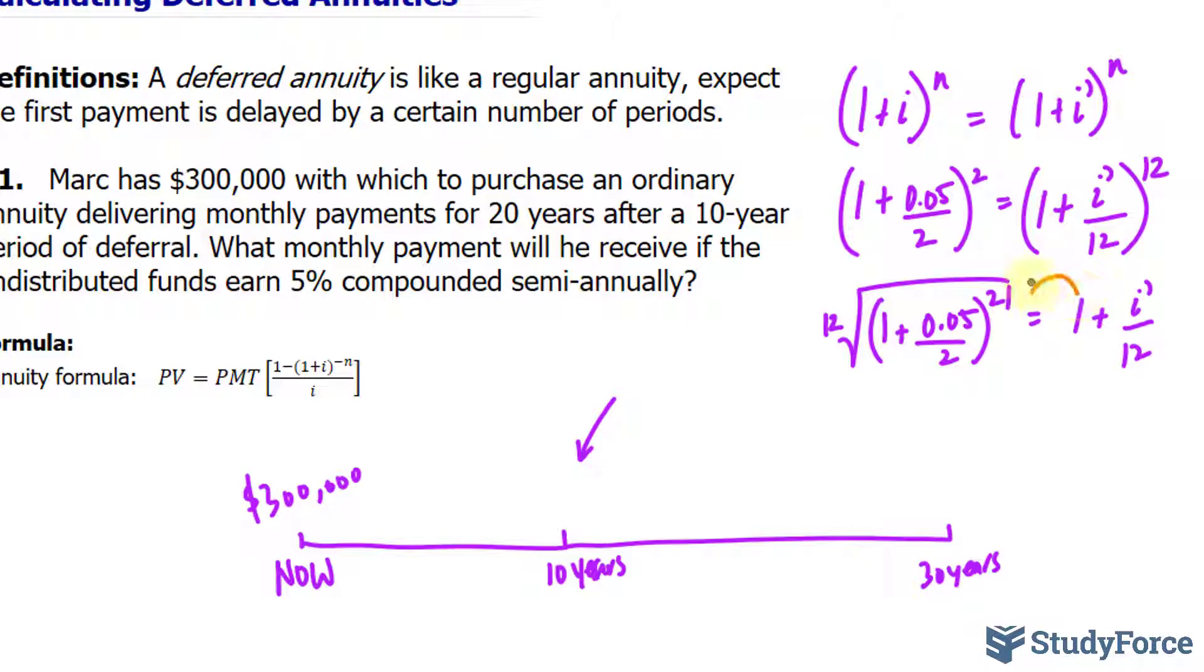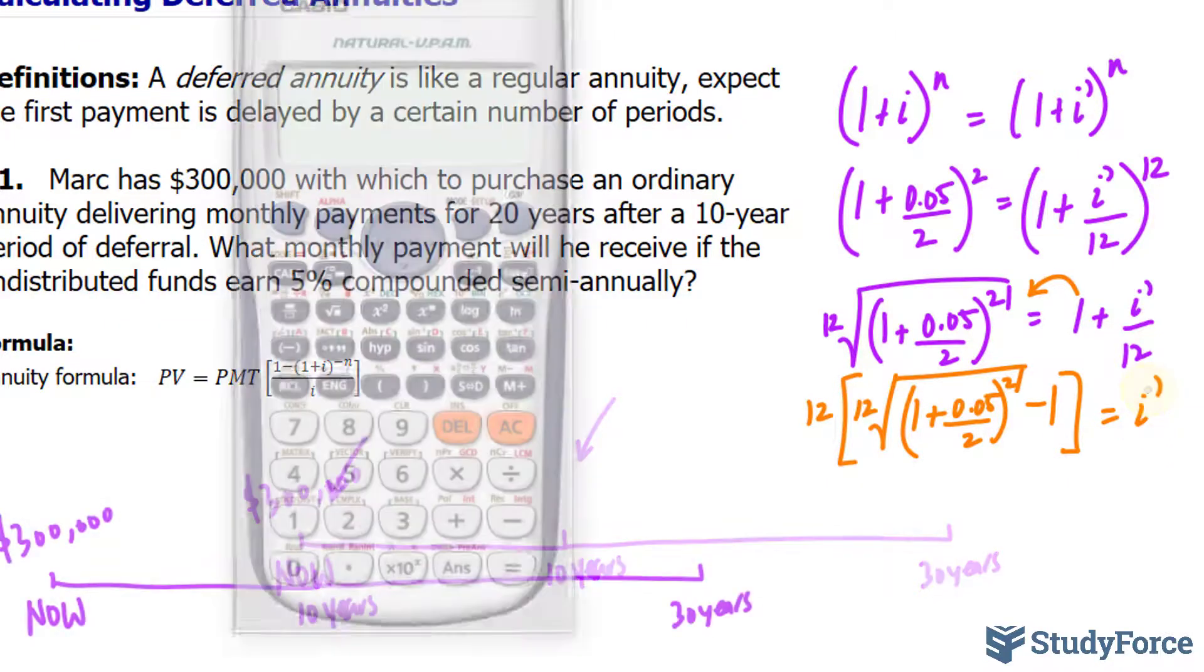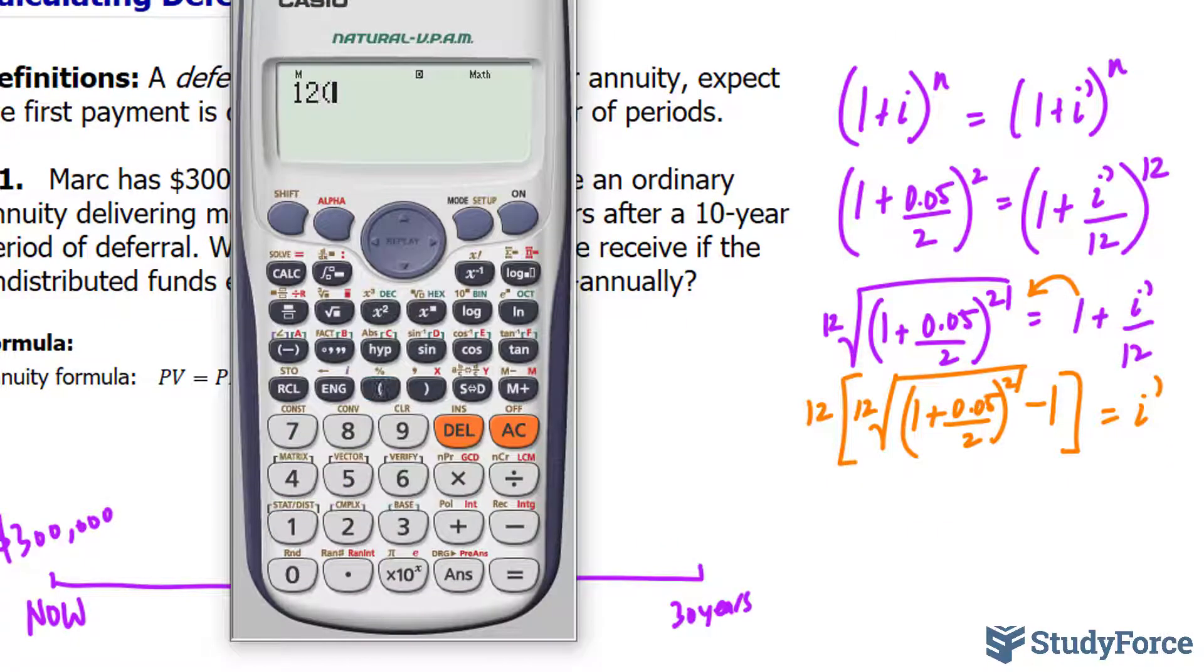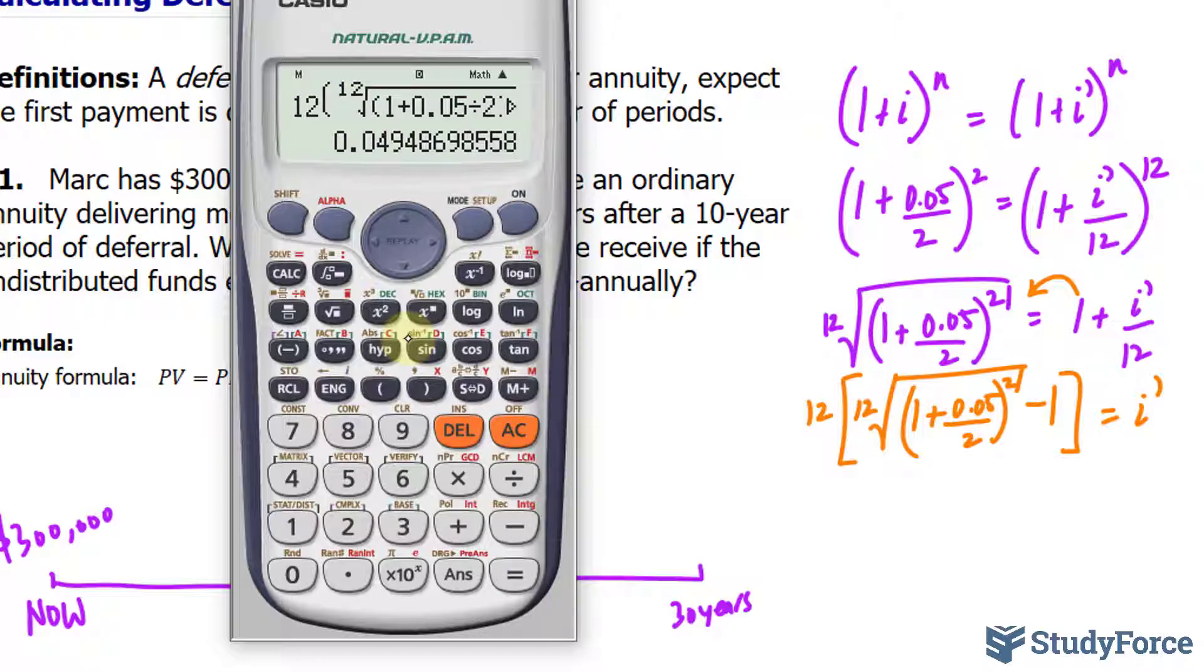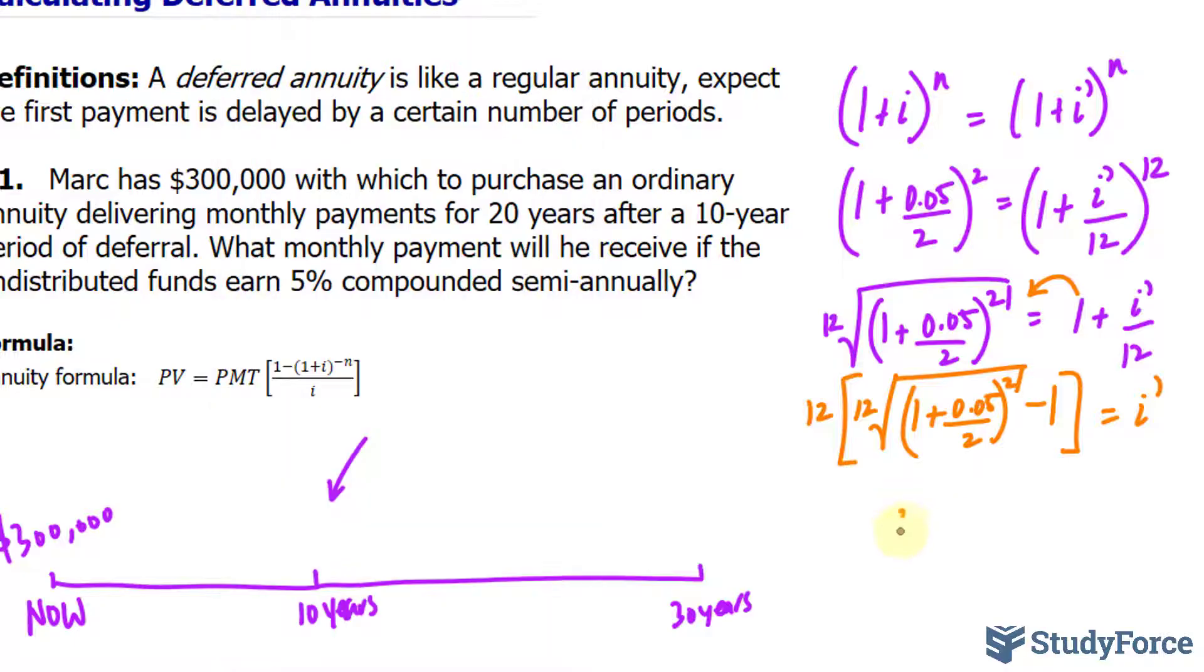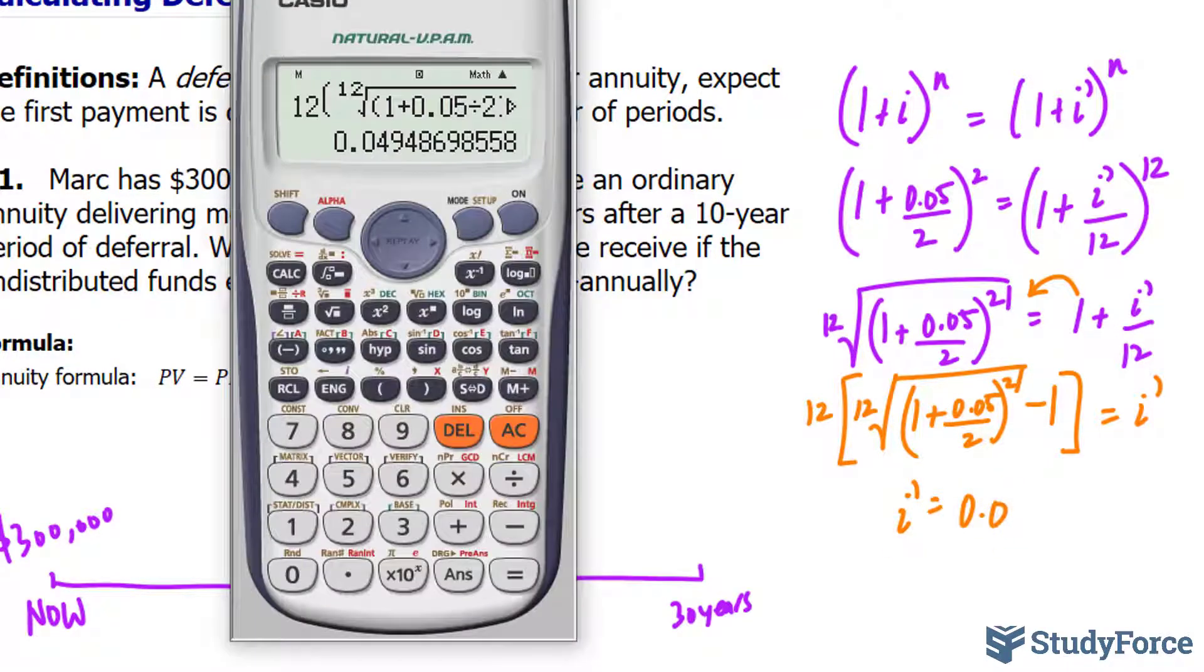I'll quickly bring this 1 over and multiply both sides by 12, gives us this equation equaling to i prime. Let's quickly use our calculator. We have 12 times the 12th root of 1 plus 0.05 divided by 2, raised to the power of 2, minus 1, close bracket. And we end up with an interest that is 0.049486.